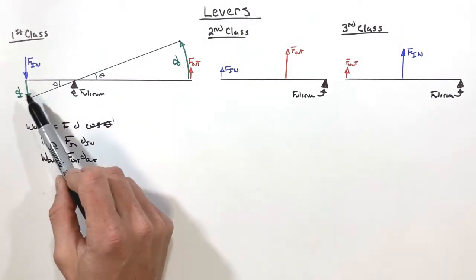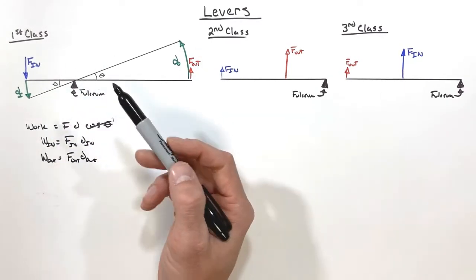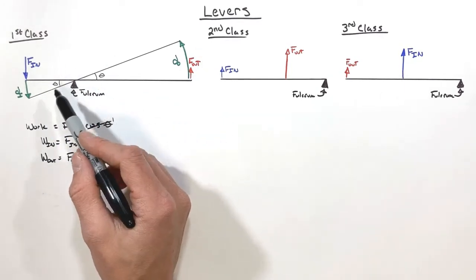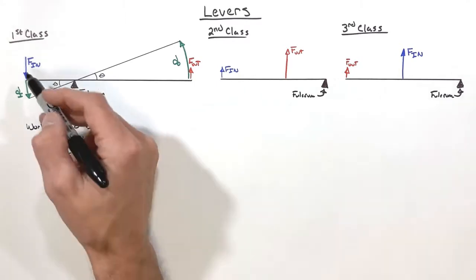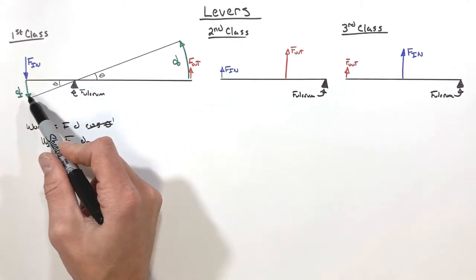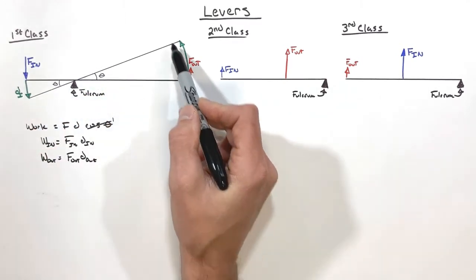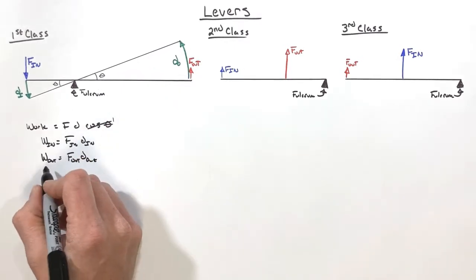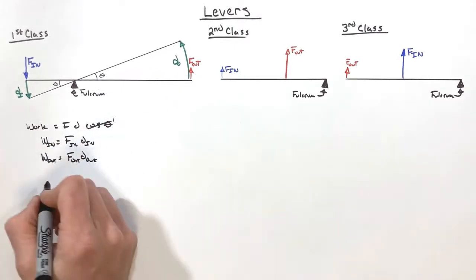Now assuming this lever has no friction on it and there's no resistance on this lever, we're going to get the perfect situation where the energy that goes into our simple machine, the lever, comes out. And that is to say the work in equals the work out.